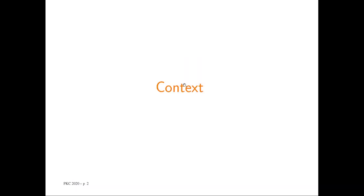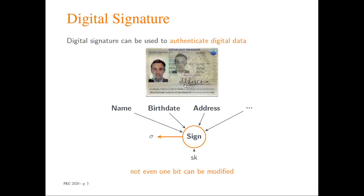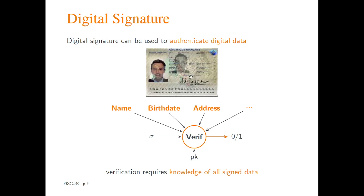The problem we study in this paper is related to digital signature, one of the main cryptographic primitives. Digital signature can be used in practice to authenticate digital data, for example to sign several messages to ensure that not even one bit can be modified. The problem when you issue one signature for a set of messages is that you need to know all the messages to check the validity of the signature.